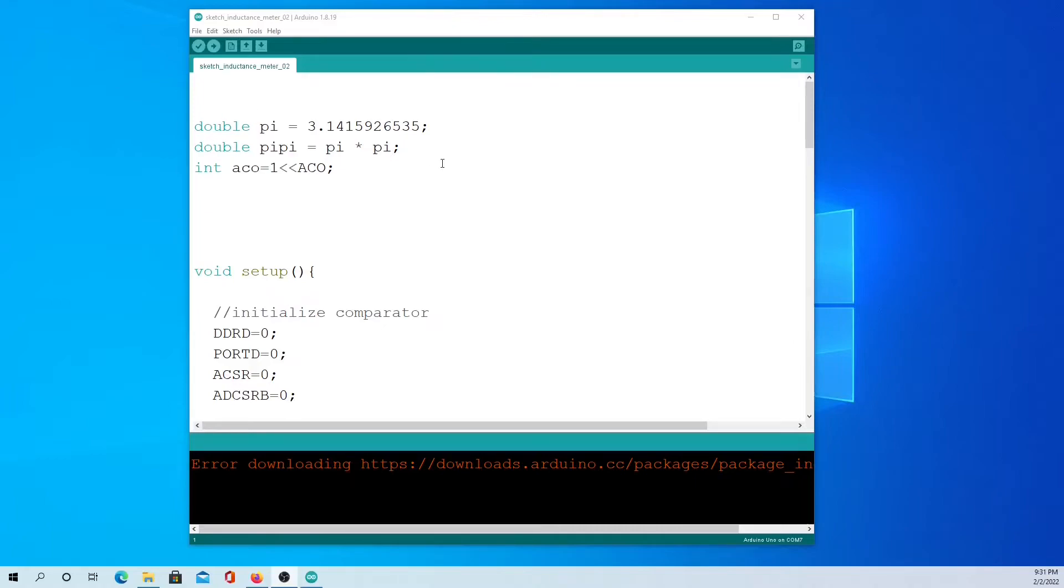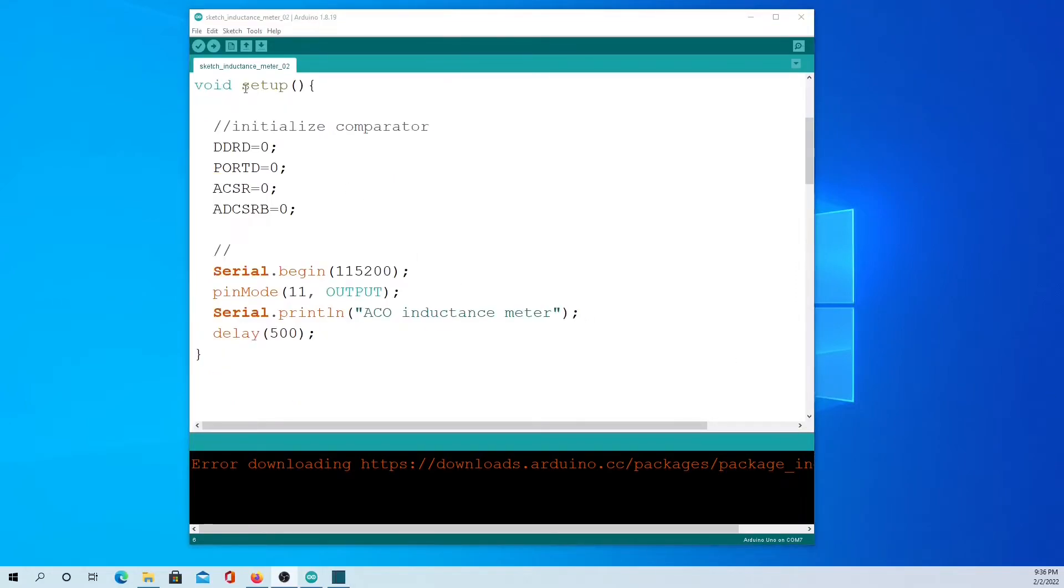This is the sketch for the Arduino. On the top of our file we define pi and pi squared. Also we define a bit mask for the analog comparator output bit in the analog comparator status register. In the setup function we initialize the comparator, then we initialize the serial port and set pin 11 to output.